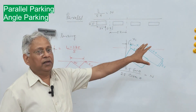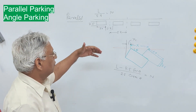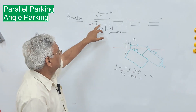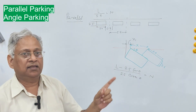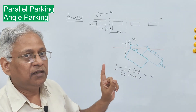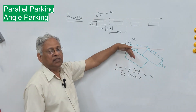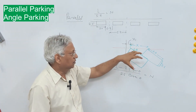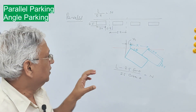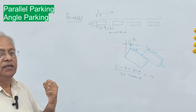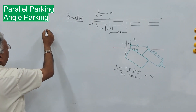When moving from parallel parking to angle parking, the number of cars that can be parked in the same length will be higher, but they will require more width along the road. Also, the maneuver of parking in and parking out becomes more difficult.